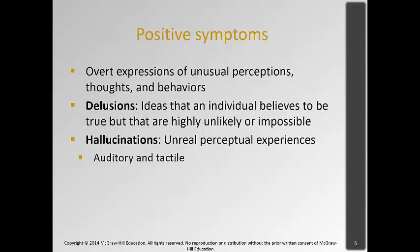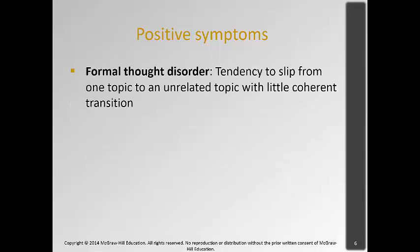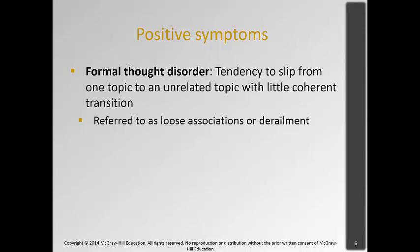Hallucinations can be auditory, where you hear voices, or tactile, where you can feel them. There's also formal thought disorder, where there's a tendency to slip from one topic to an unrelated topic with little coherent transition. For example: 'I'm watching the baseball game and then my mother baked some bread and then after that we went to the store...' — you can see there was really little coherence to what was being said. It refers to loose associations or derailment.